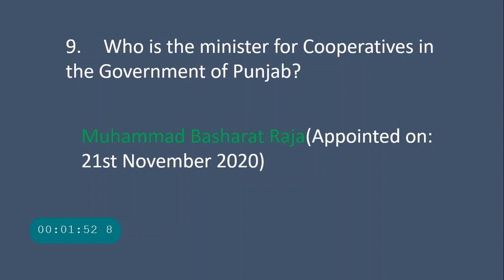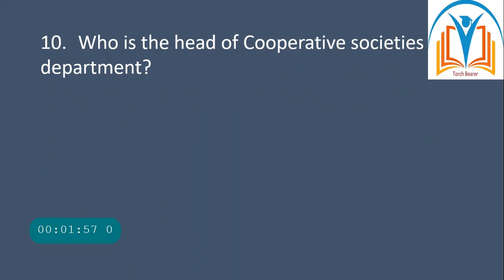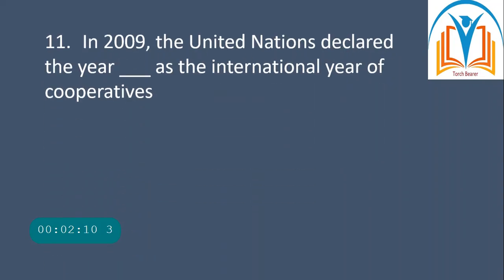Question number nine: who is the minister for cooperatives in the government of Punjab? Muhammad Basharat Raja, and he was appointed on 21st November 2020. Question number ten: who is the head of the cooperative societies department? The Registrar Cooperative Societies is the head of the cooperative societies department.